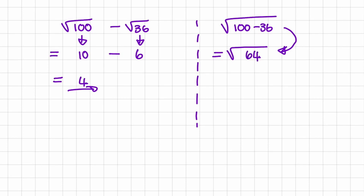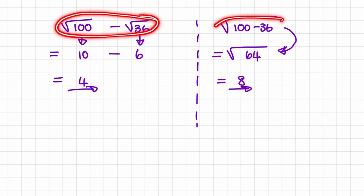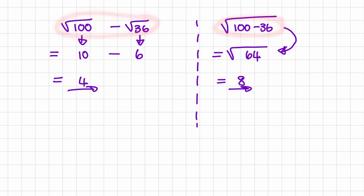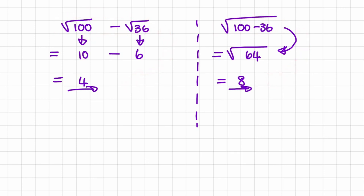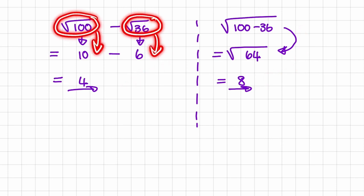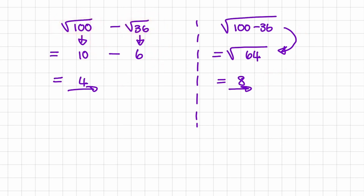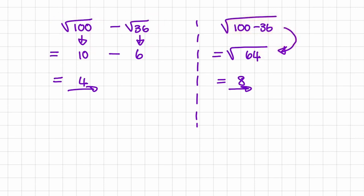And the square root of 64 is 8. So notice again, even though we are using similar values, the answers are different. The reason is, in our first example, we first need to find the values of two square roots separately. And in our second example, we first do the calculation inside of the square root and then find the square root of one value.